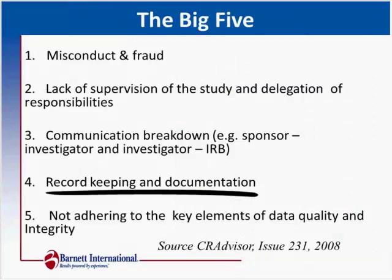The FDA tends to pay really close attention to the areas where investigators and clinical staff tend to go wrong. Those areas are misconduct and fraud, lack of supervision of the study, and delegation of responsibilities. Communication breakdown — between the sponsor and the investigator or the investigator and the IRB — and then record keeping and documentation, and not adhering to the key elements of data quality and integrity. All of these areas — supervision, communication, and adherence to the protocol — are all essential documents that the site is required to maintain.